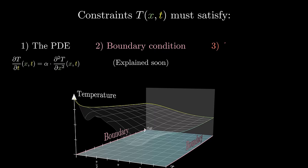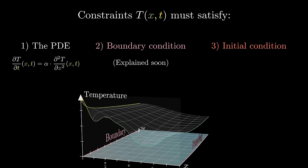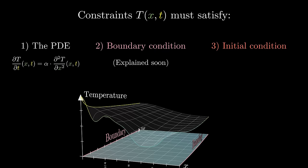It must also satisfy certain boundary conditions, which is something we'll talk about momentarily, and a certain initial condition. That is, you don't get to choose how it looks at time t equals zero. That's part of the problem statement.